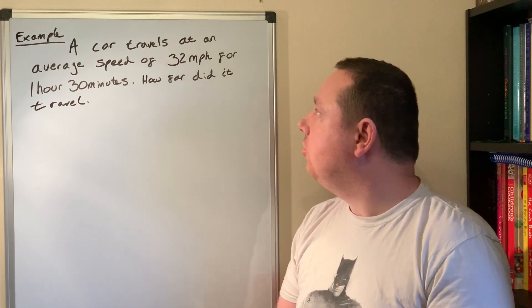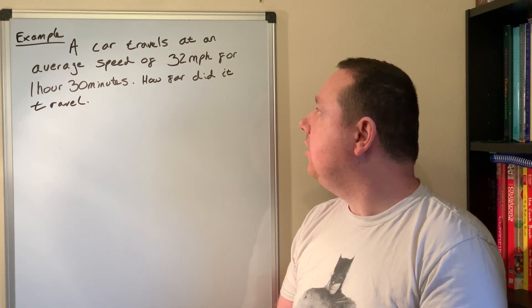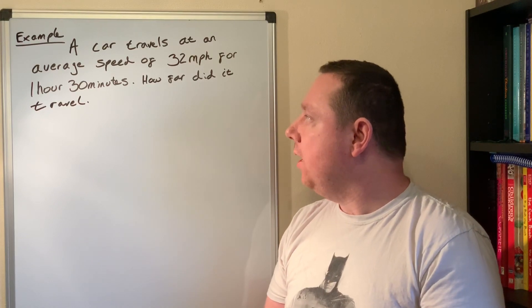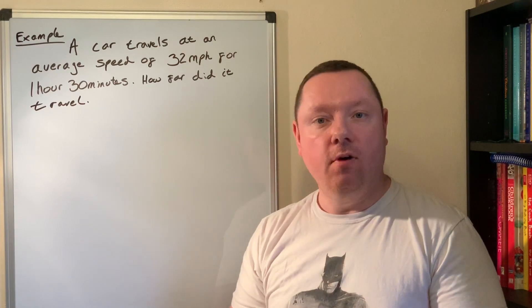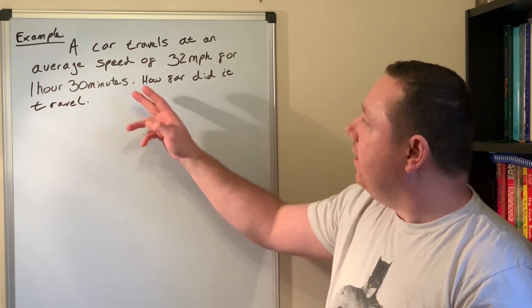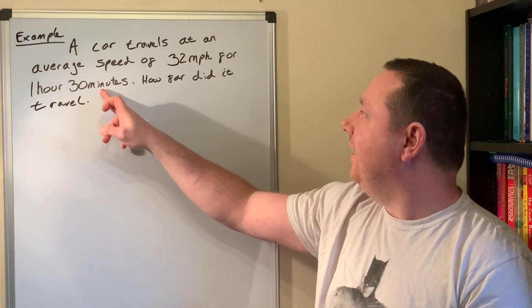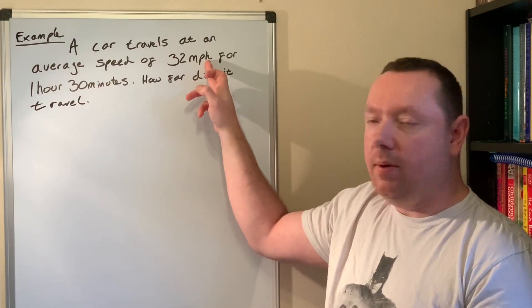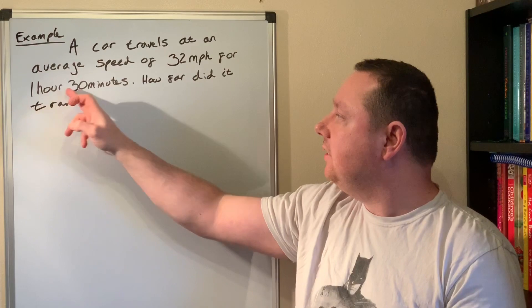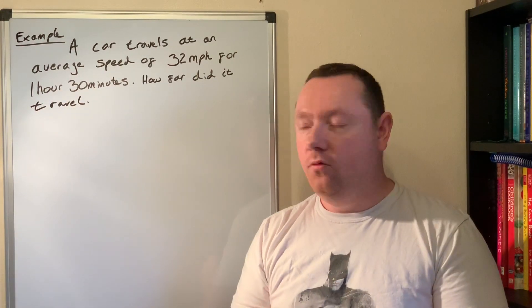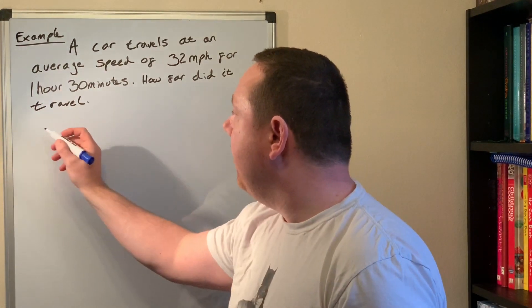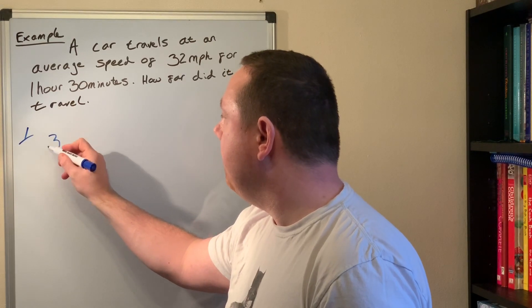Example two: a car travels at an average speed of 32 miles per hour for one hour and 30 minutes. How far did it travel? So again we've got a mixture of hours and minutes here this time, and we've only got hours in our miles per hour, so we're going to have to convert this into one whole fraction. So we'll take the minute part first, 30 minutes.